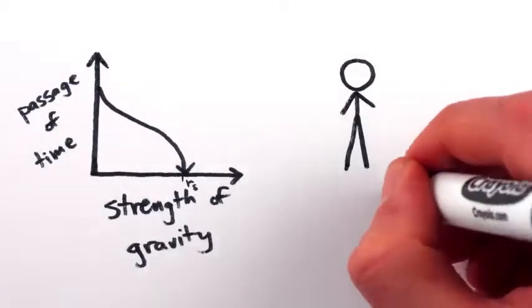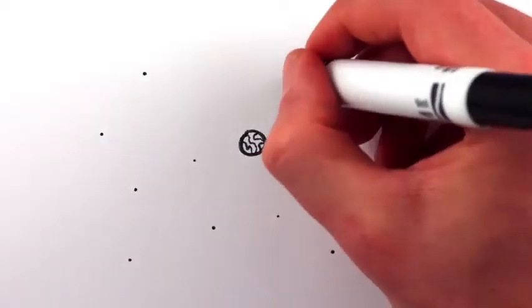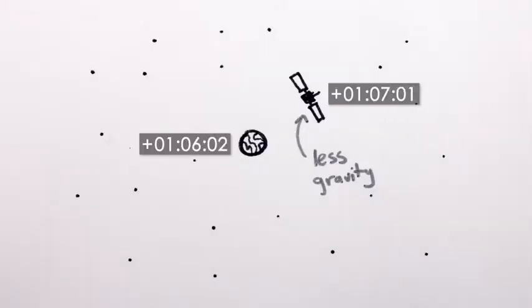If you stand up for a minute, your feet will age 10 femtoseconds less than your head. On the other hand, GPS satellites high in orbit experience less of Earth's gravity and thus travel noticeably faster through time than we do, which is why their clocks are calibrated to run slow.